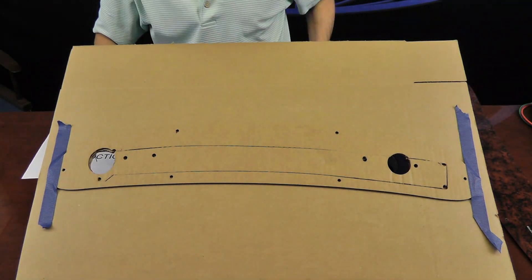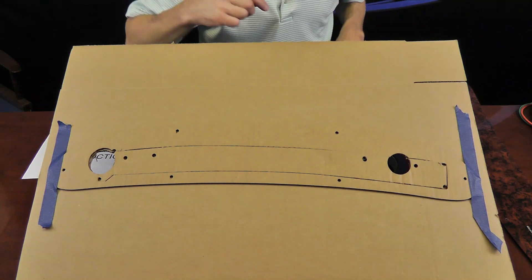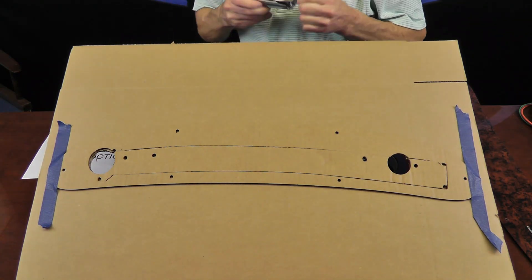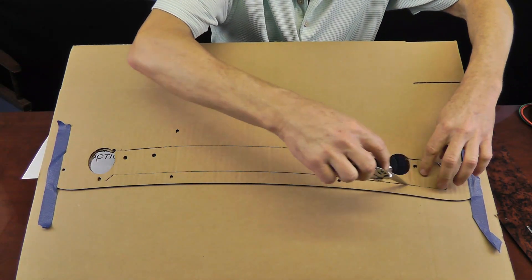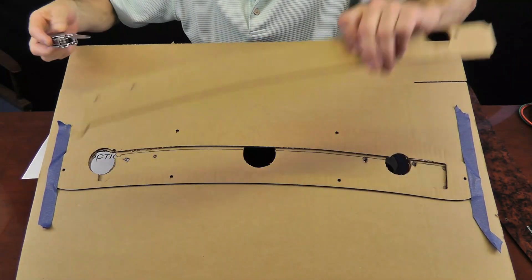Once it's mounted into position, there's a thin line scribed, and you're going to take a razor knife and cut that area out, just like this, and remove this center piece.